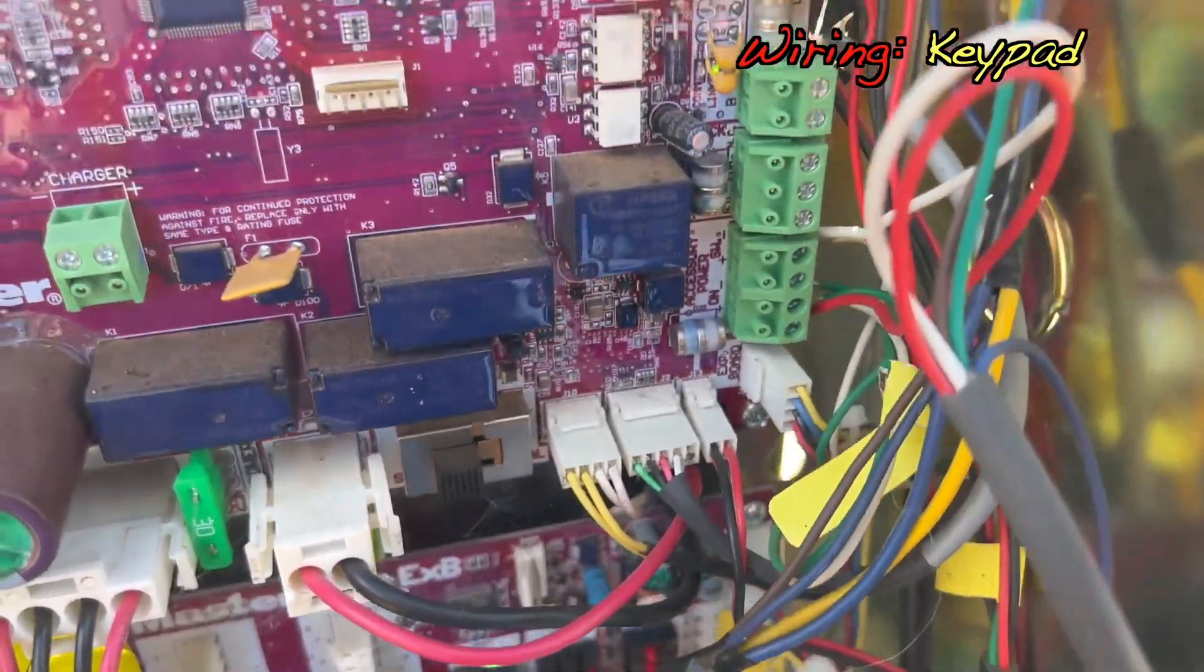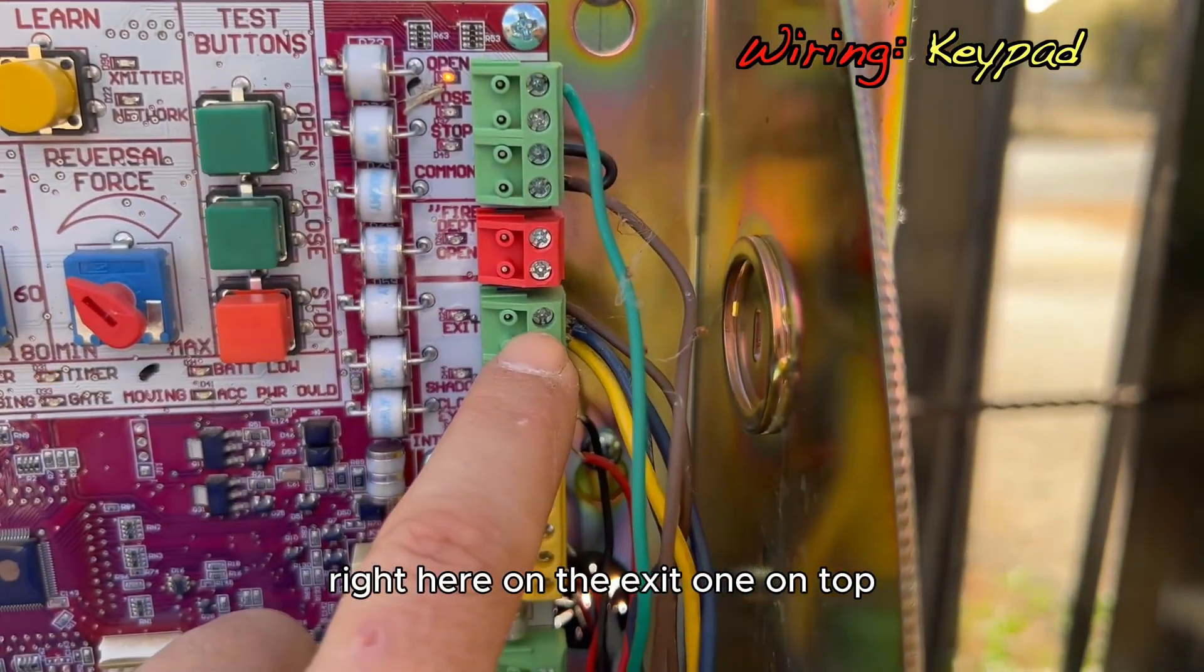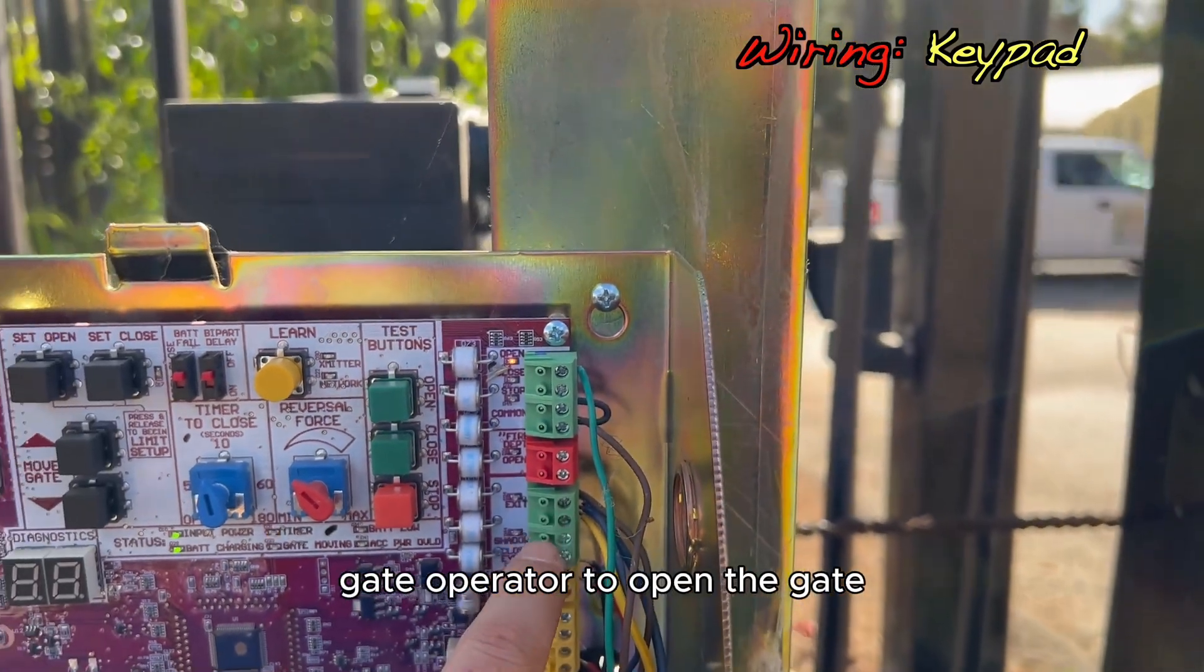And those go up to the same connections as the loop detector right here on the exit, one on top, one on bottom. And when they make contact, they give that command to the gate operator to open the gate.